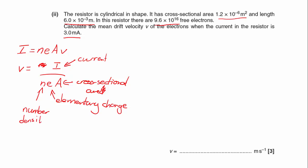So the number density is the number of free electrons per unit volume. In the question it tells us in this resistor there are 9.6 times 10 to the 16 free electrons, but the resistor isn't a meter cubed of volume. So what we have to do is work out the number density, which will be the number of free electrons inside our volume divided by the volume.